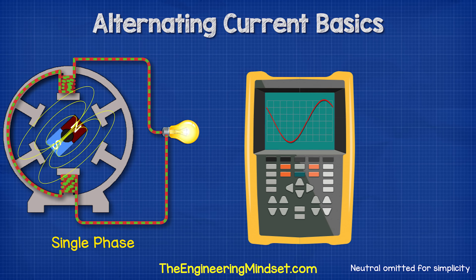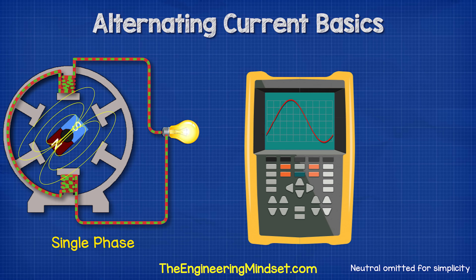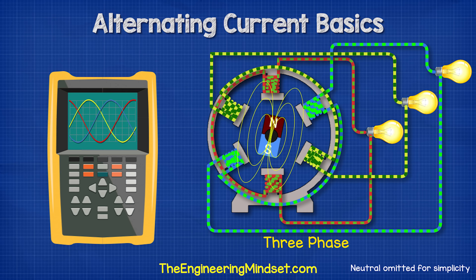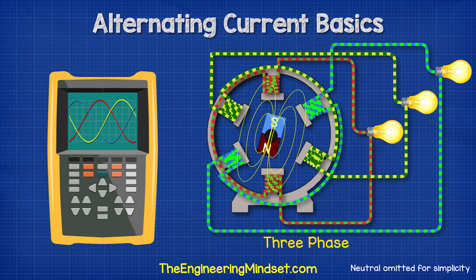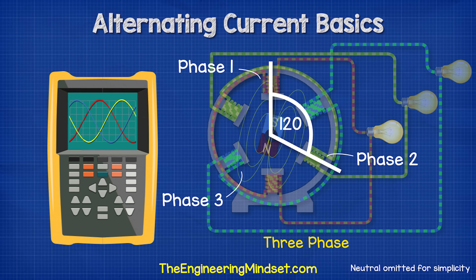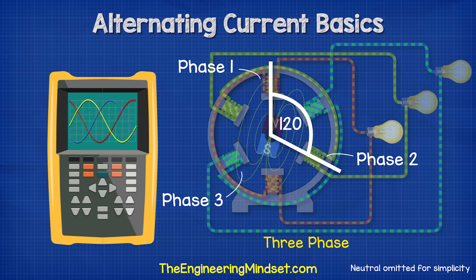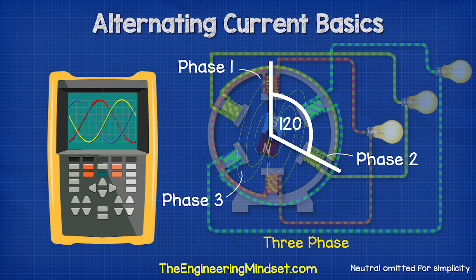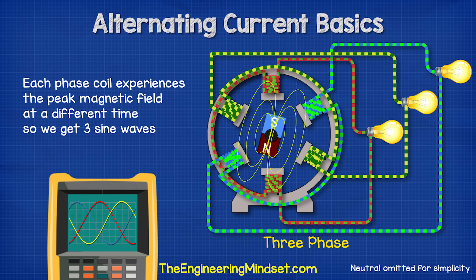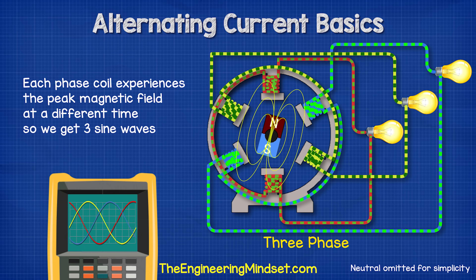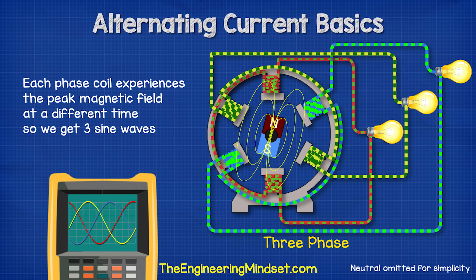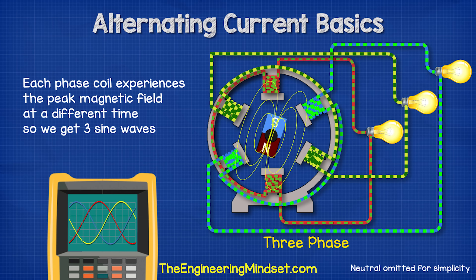With single phase, we have a connection to just a single phase from a generator, so we have just one sine wave. But with three phase electricity, we have a connection to each of the three phases. The phases are coils of wire which were inserted into the generator 120 degrees apart from the previous. This means the coils experience the peak of the rotating magnetic field at different times, and it's this that gives us our three phases, each with a different sine wave that is slightly out of sync from the previous.